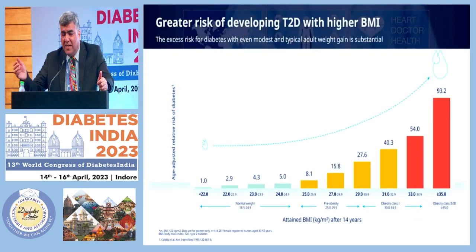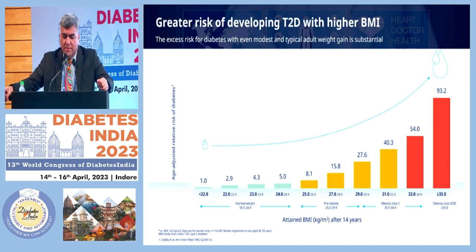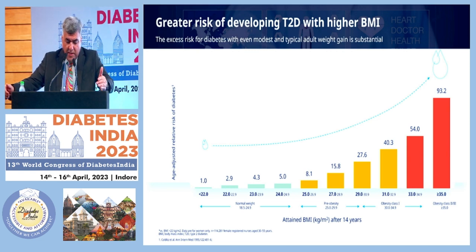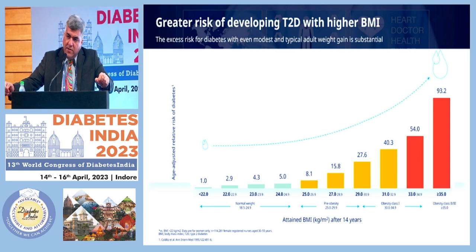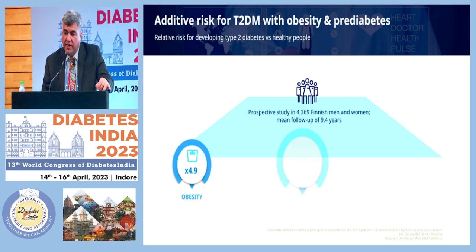The first answer from all of you was diabetes — that's the commonest association, though most others are now on the rise and equally important. Greater the BMI, greater is the risk of developing type 2 diabetes. That's established through evidence. This is even true in the Indian population, where higher BMI means higher risk of developing type 2 diabetes.